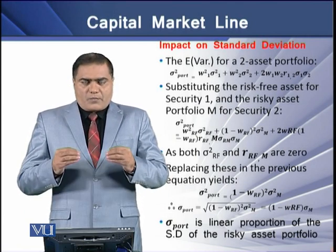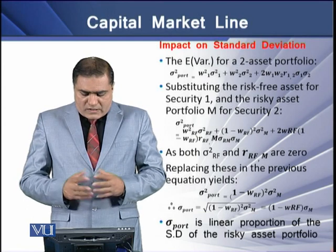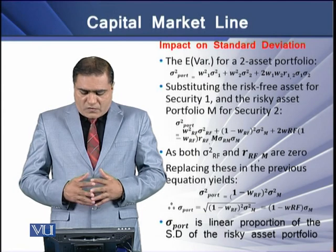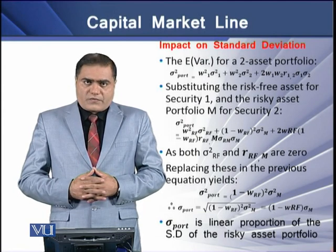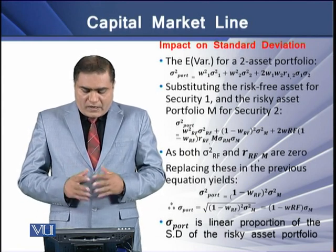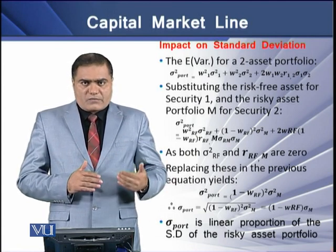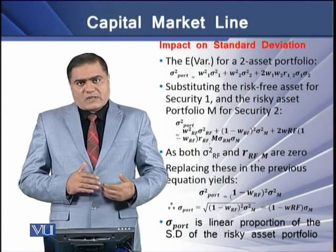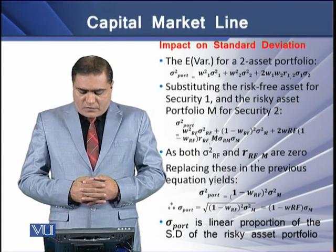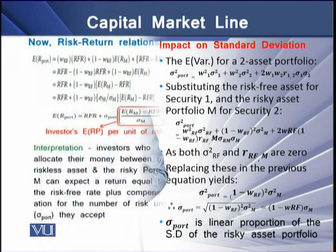When we place zero into the variance equation, the standard deviation of the portfolio simplifies to one minus the weight of the risk-free asset, multiplied by the standard deviation of the market portfolio. The result is the same as before: this portfolio's standard deviation is a linear proportion of the standard deviation of the market portfolio.